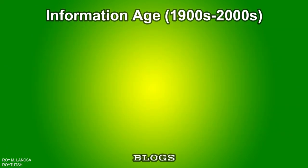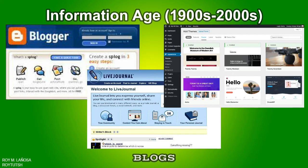A blog is a discussion or informational website published on the World Wide Web, consisting of discrete entries. Posts are typically displayed in reverse chronological order so that the most recent post appears first at the top of the webpage. Examples of blogs include Blogspot, LiveJournal, and WordPress.